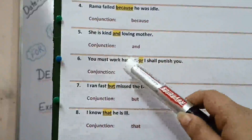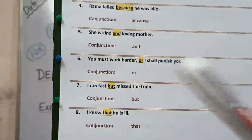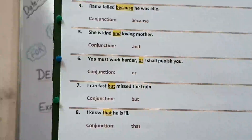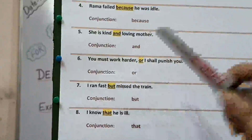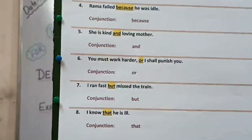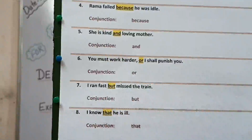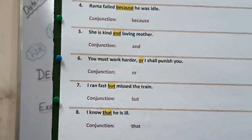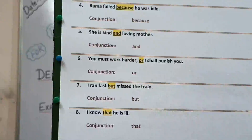Sixth part: you must work harder or I shall punish you. There are choices — the person must work harder or he will get punished. So the conjunction used is 'or'. Seventh: I ran fast but missed the train. Here they are contrasting ones, so the conjunction is 'but'.